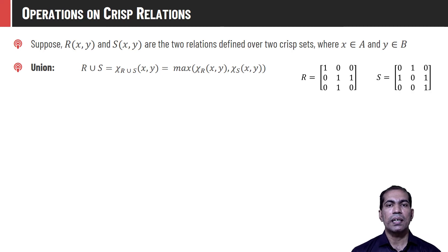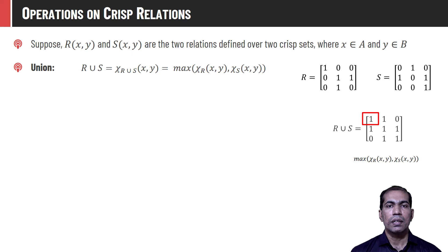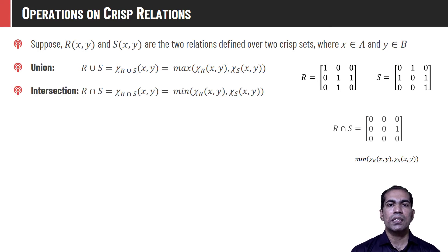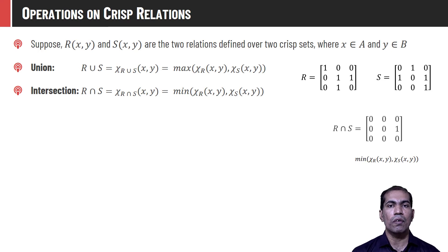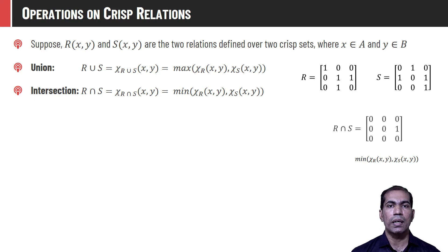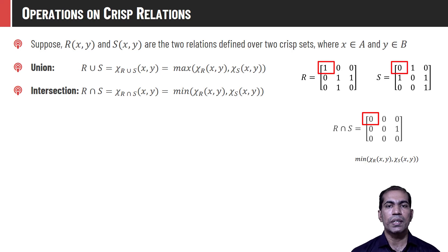Consider the relations R and S given: the union of R and S has each membership value as the maximum of the corresponding elements in R and S — as we can see the highest value is 1. Intersection always returns the minimum value. The intersection R ∩ S has χ_{R∩S}(x, y) = min(χ_R(x,y), χ_S(x,y)). For the given example, the membership value of a tuple in the intersection is 0 because the corresponding value in R is 1 and in S is 0, and the minimum of that is 0. In an identical way we can compute it for the rest of all the elements.